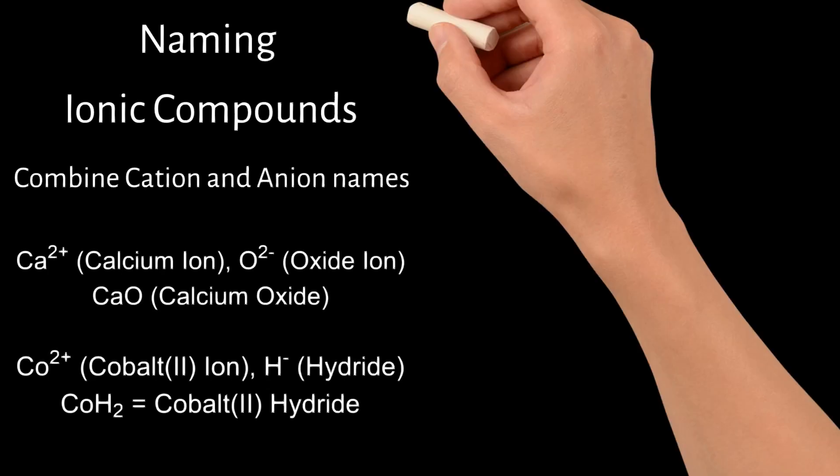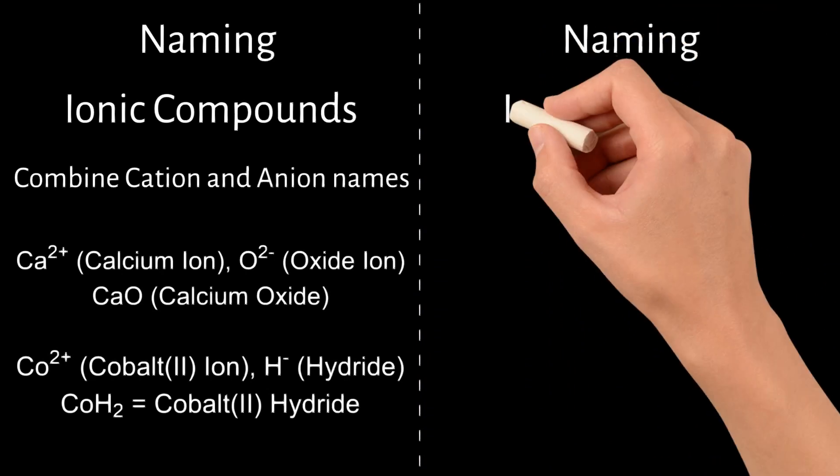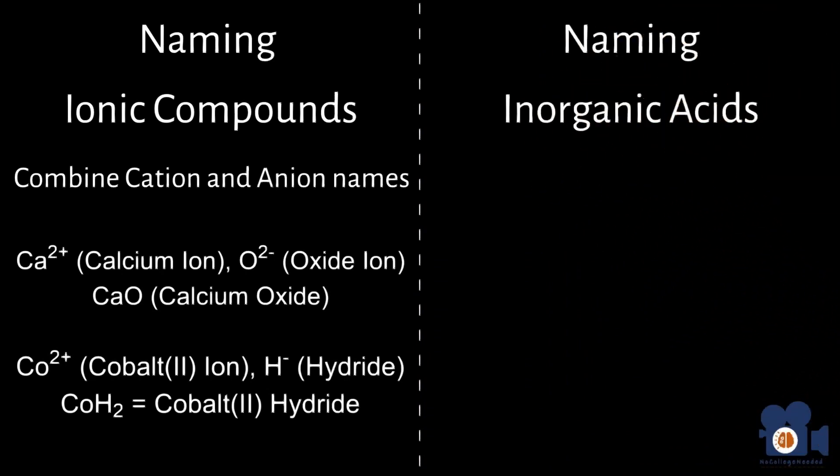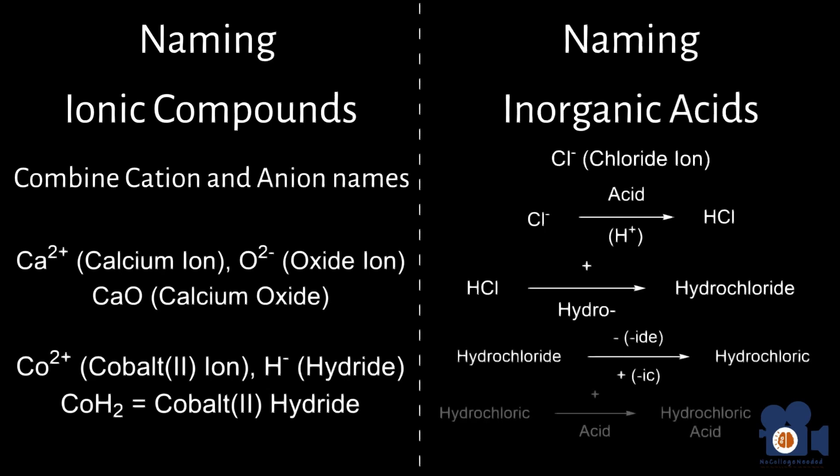The last category of naming acid inorganic compounds builds off of previous knowledge. Remember, anions of single elements, we replace the ending with an IDE, so the chlorine anion Cl- would be chloride. To convert that to an acid, we add hydrogen to the chemical formula, making HCl. To update the name, we add the prefix hydro, change the ending IDE to IC, and add the word acid. So HCl would be named hydrochloric acid.